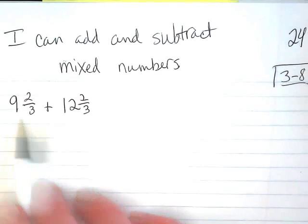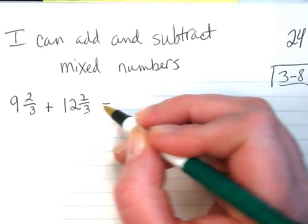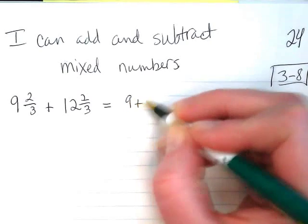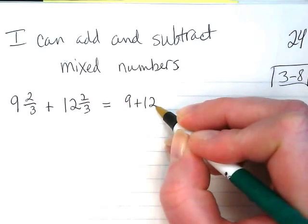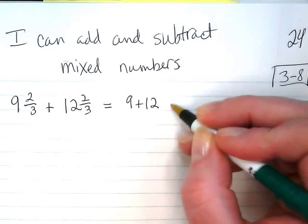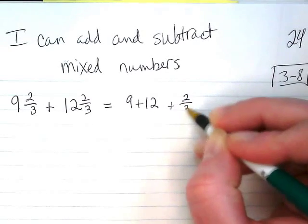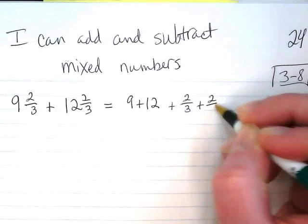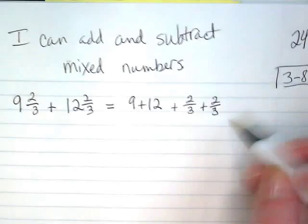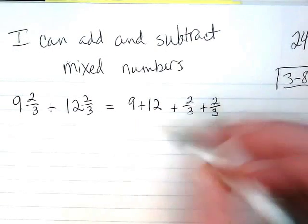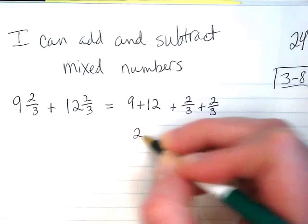What we can do is we can take the whole numbers and rewrite the problem as 9 plus 12 and 2 thirds plus 2 thirds. So first I'm going to add the 9 plus 12, which is going to be 21.